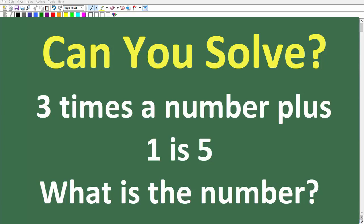What we want to understand is that when we have a statement like this — '3 times a number plus 1 is 5' — this is not algebra on its own. This is just a sentence. We need to talk about how we can convert a verbal statement into an algebraic or variable sentence and then go ahead and answer the question: what is the number?